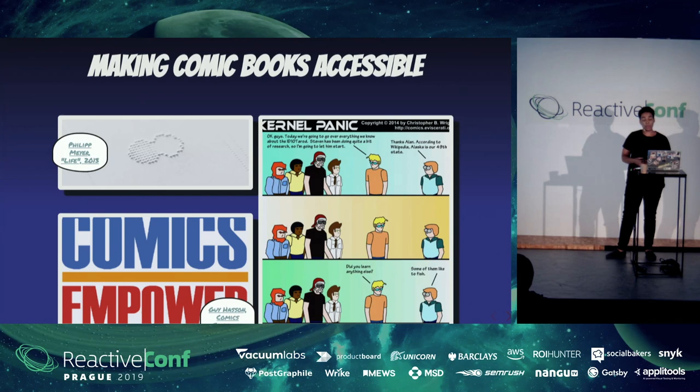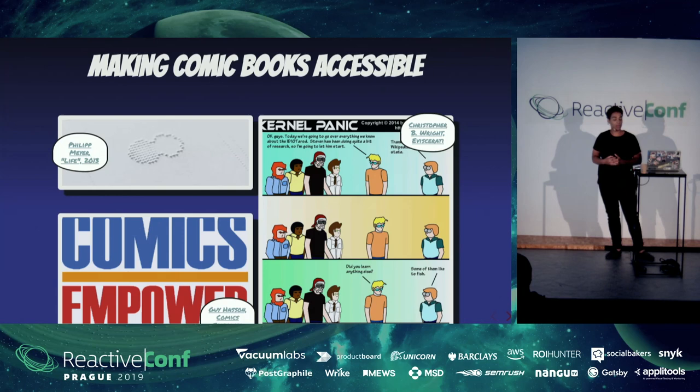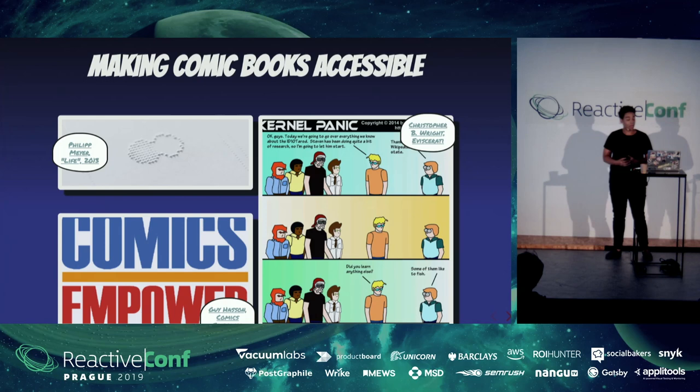Last but not least, I also want to highlight another example of accessible web comics — an interesting comic series by Christoph B. Wright called Ivis Cerati. He makes a point that each time he uploads a new image for a comic strip on his website, he also uploads a transcript that describes each scenario in every panel and what the characters are talking about. This makes an image format that is usually not accessible directly accessible by providing the related transcript, so screen reader users can make sense of it as well.